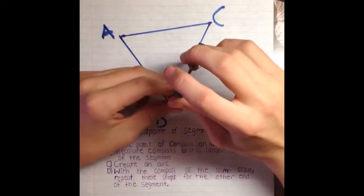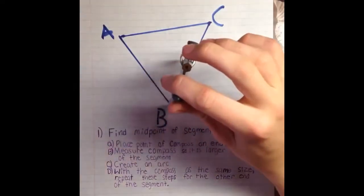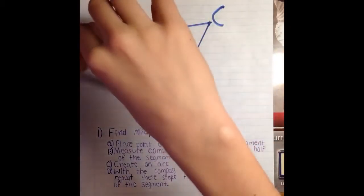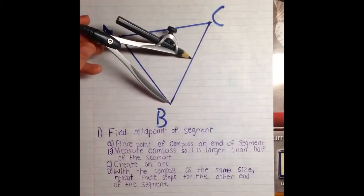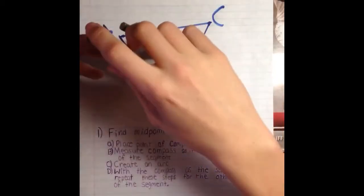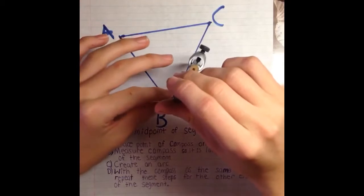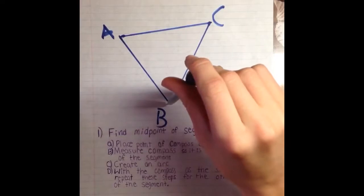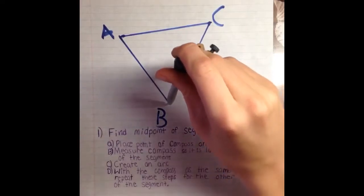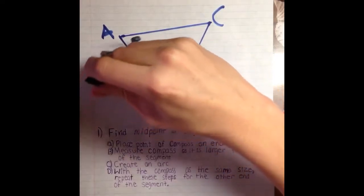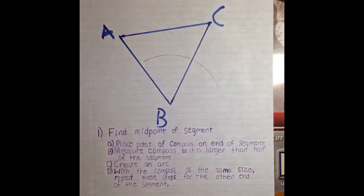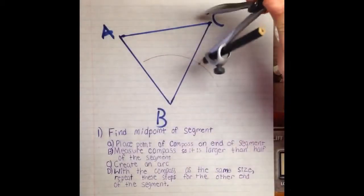So first I'm going to place the point on the end of segment BC. I already made sure that the length of the compass is larger than half of that segment. Now I'm going to construct an arc, and then repeat these steps from the other end of the segment.